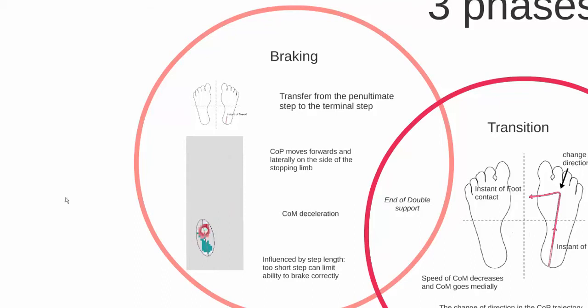The center of pressure therefore moves forwards and laterally on the side of the first leg which stops, i.e. the last support. This foot placement will enable the center of pressure to move ahead of the center of mass to decelerate it. A step length too short may also affect the termination by limiting the ability to brake the center of mass to the desired location.